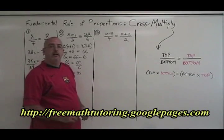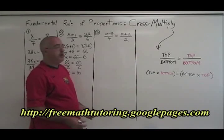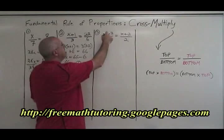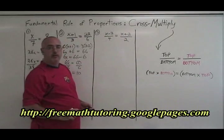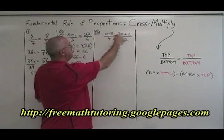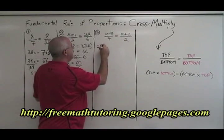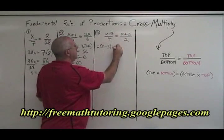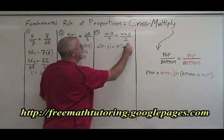Now we move on to a slightly more complicated looking proportion. It has two variables that are both part of small algebraic expressions. We can still solve with cross multiplication. Top times bottom means 2 times x minus 3 equals bottom times top means 4 times x plus 2.